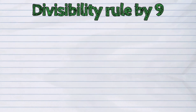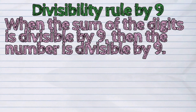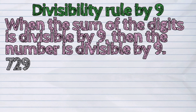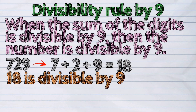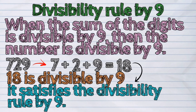Divisibility rule by nine: when the sum of the digits is divisible by nine, then the number is divisible by nine. For example, let's check if 729 is divisible by nine. Seven plus two plus nine is eighteen. Eighteen is divisible by nine, so it satisfies the divisibility rule by nine.